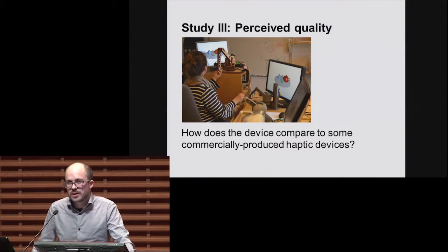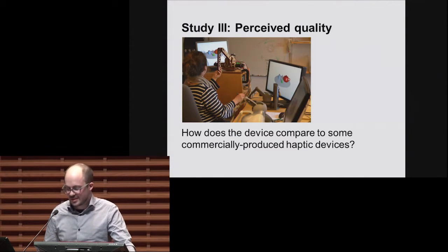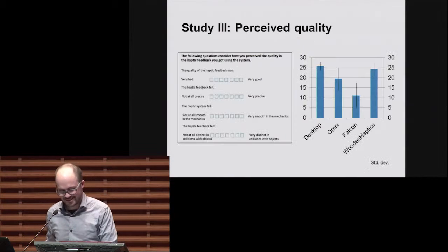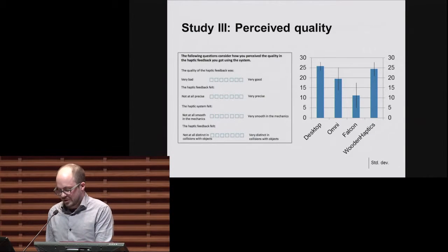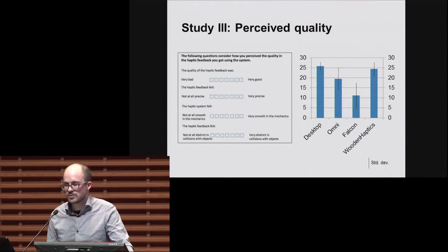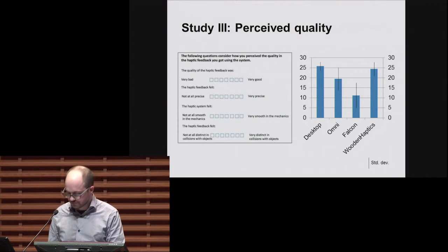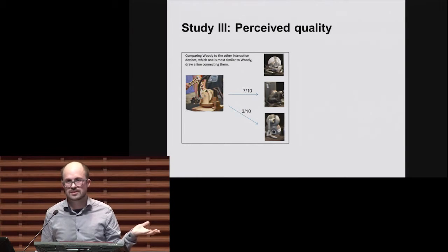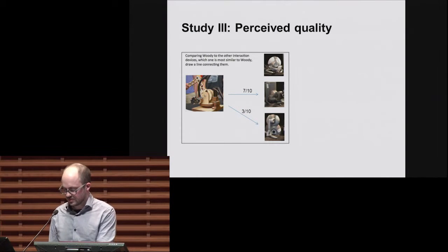So, does this homemade device work well in reality? Well, we performed the study with 10 participants that got to judge the haptic qualities of the device and compare it with some commercially produced devices. And you can also judge for yourself later in the demo. So, the participants, they got to try them all and then rate them one by one on a one to seven Likert scale in four dimensions. And the sum of the result shows that the wooden haptics device was rated somewhere between the Phantom Omnium and Phantom Desktop. And we also asked the participants to draw a line between the wooden haptics device and the three commercial ones to answer the question which one they thought were most similar in their feeling. And seven out of ten selected the Phantom Desktop, which is a quite nice result given that that device cost about ten thousand dollars.